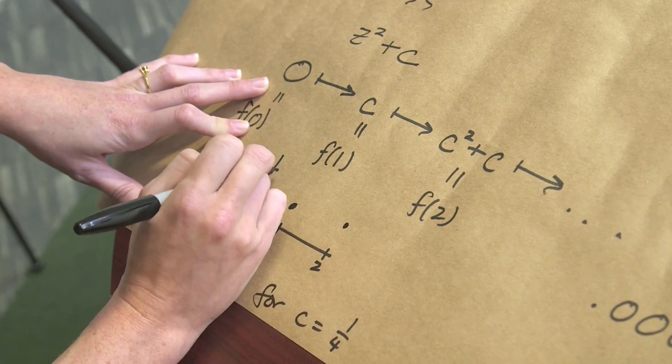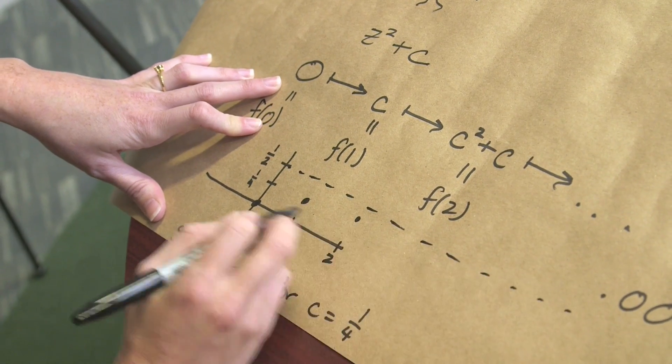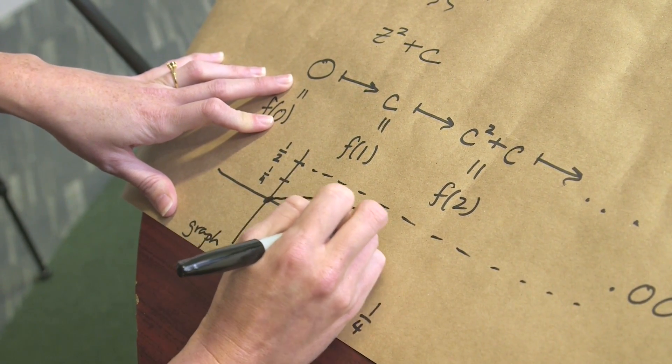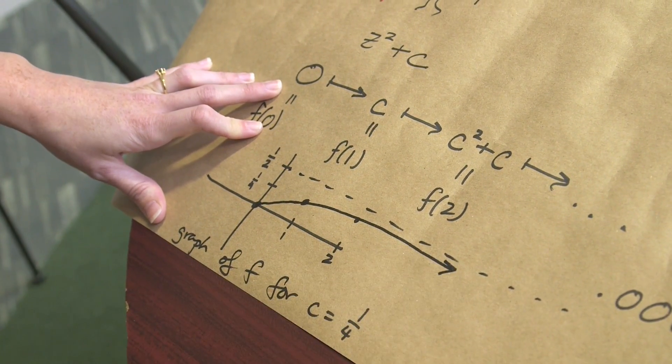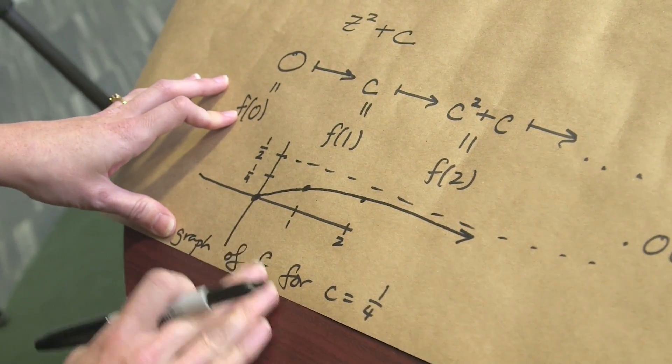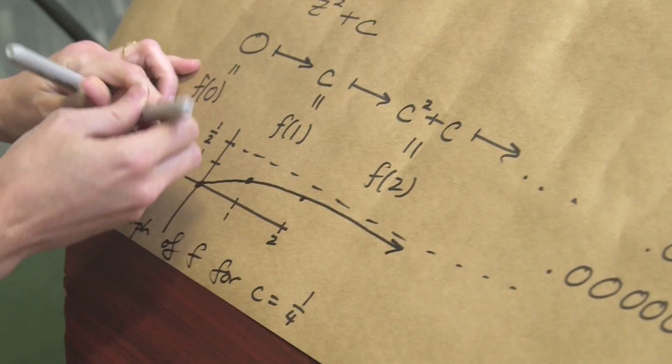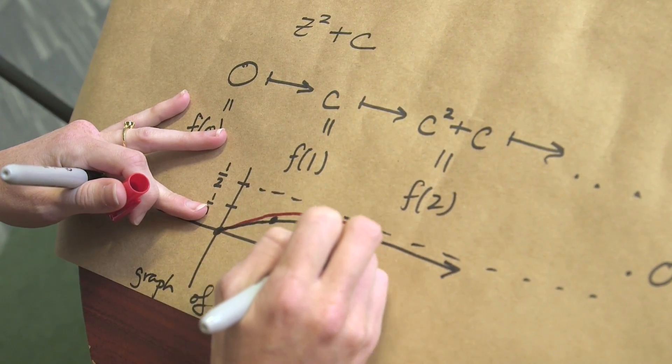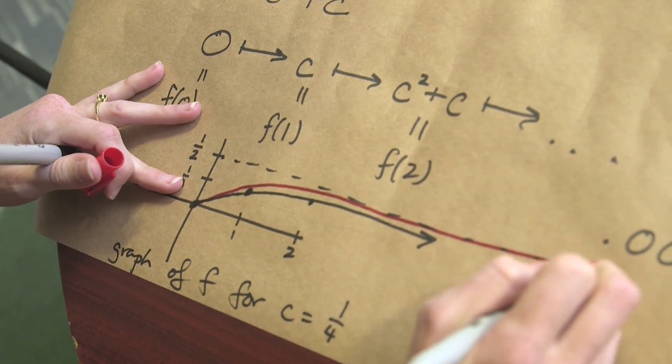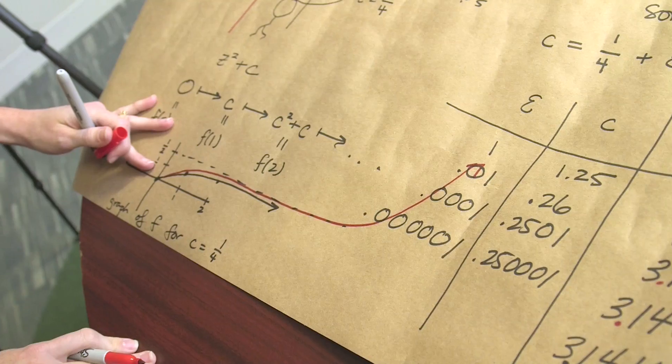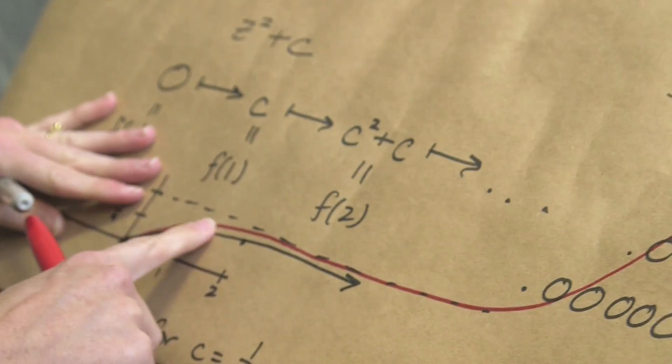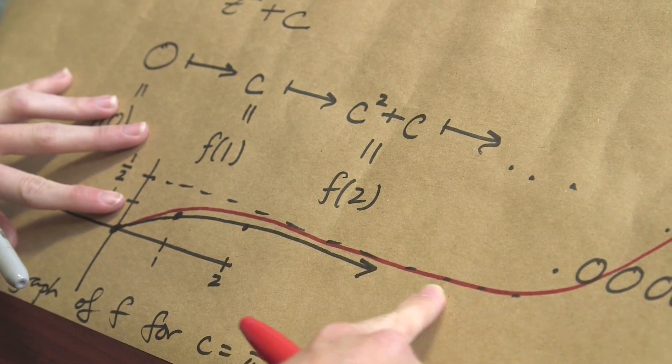Right, so f of 2 is a little bit larger, but we have this line that we can never cross with the graph of our function. Okay. And if c is a little bit larger than 1 quarter, I'll draw it on the same plane here. Then almost the same thing happens but we have this big stretch where we hover around 1 half before we go crazy.